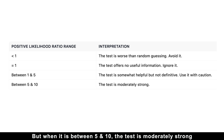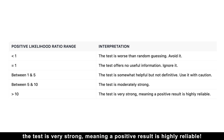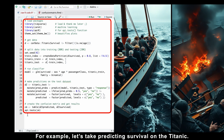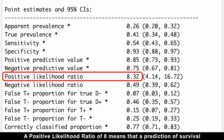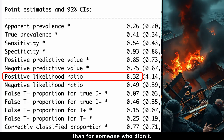When the positive likelihood ratio is between 5 and 10, the test is moderately strong. And if it exceeds 10, the test is very strong, meaning a positive result is highly reliable. For example, with the Titanic survival prediction, a positive likelihood ratio of 8 means that a prediction of survival is 8 times more likely for someone who actually survived than for someone who didn't.